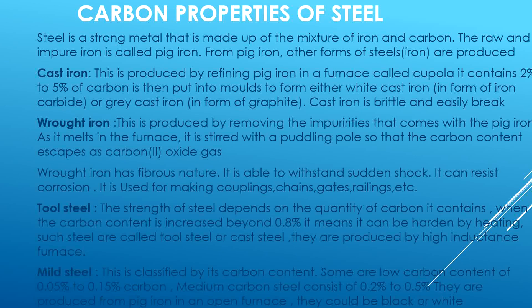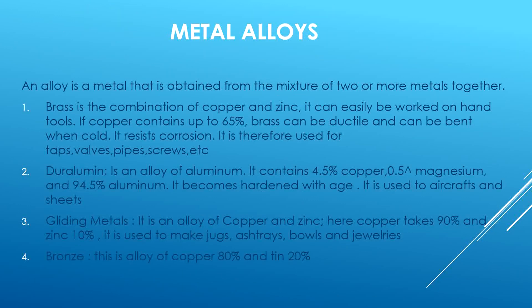Steel: the strength of the steel depends on the quantity of carbon content. When the carbon content is increased beyond 0.8 percent, such steel is known as cast steel and is produced by high-conductance furnaces. Mild steel is classified by its carbon content: low carbon steel contains 0.05 percent to 0.15 percent carbon; medium carbon steel consists of 0.2 percent to 0.5 percent carbon. They are produced from pig iron in an open furnace and can be black or white.